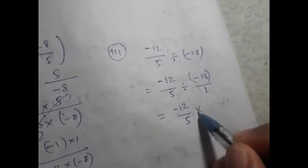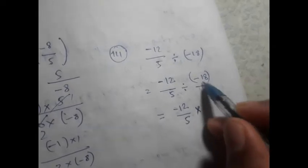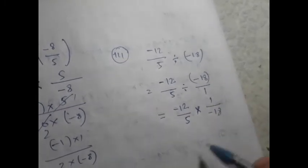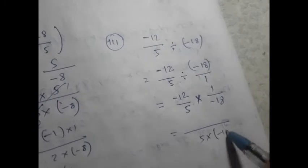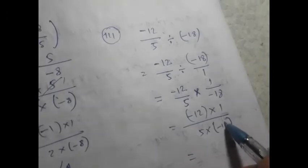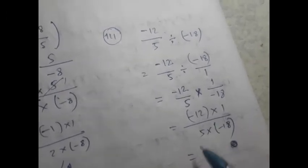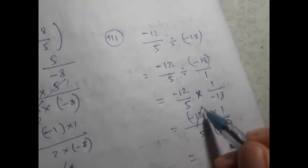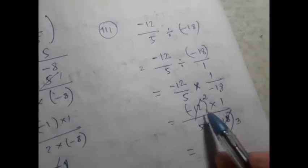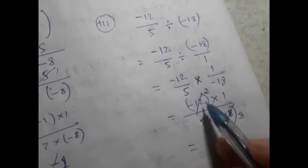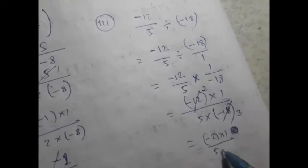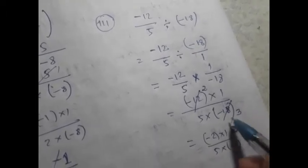And I'll write the first one. I'll write it back. This is minus 12. It's all the same. 5 into minus 18. Minus 12 into 1. How do I write? Minus 2 into 1. 5 into minus 3. That's minus 18.